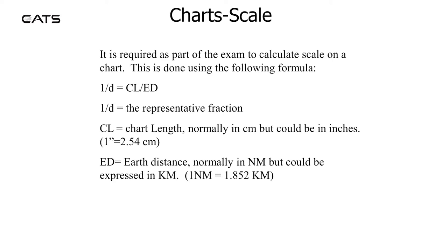To calculate the scale on the chart, this is done using the following formula: 1 over d equals chart length over earth distance. 1 over d is the representative fraction. CL scale is chart length, normally in centimetres but it could be in inches — 1 inch is 2.54 centimetres. ED is earth distance, normally in nautical miles but it could be expressed in kilometres. 1 nautical mile is 1.852 kilometres.